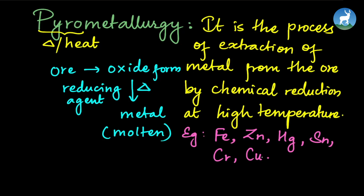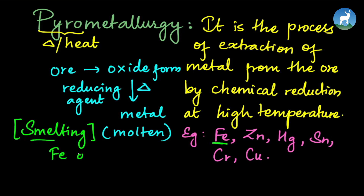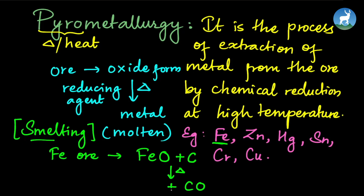Pyrometallurgy uses the smelting process. For example, to extract iron: FeO is heated with carbon, producing carbon monoxide and free molten iron through chemical reduction at high temperature.